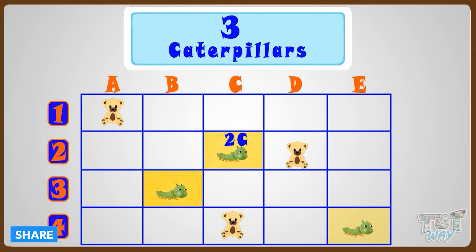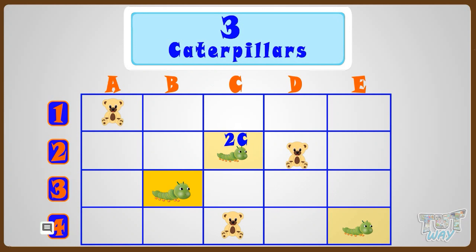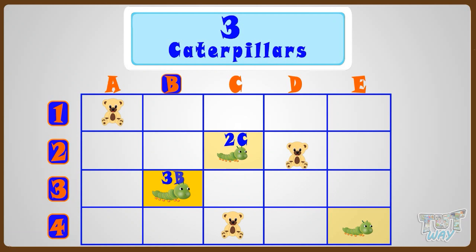Another caterpillar is at the 3rd row and B column, so we can name its position as 3B.